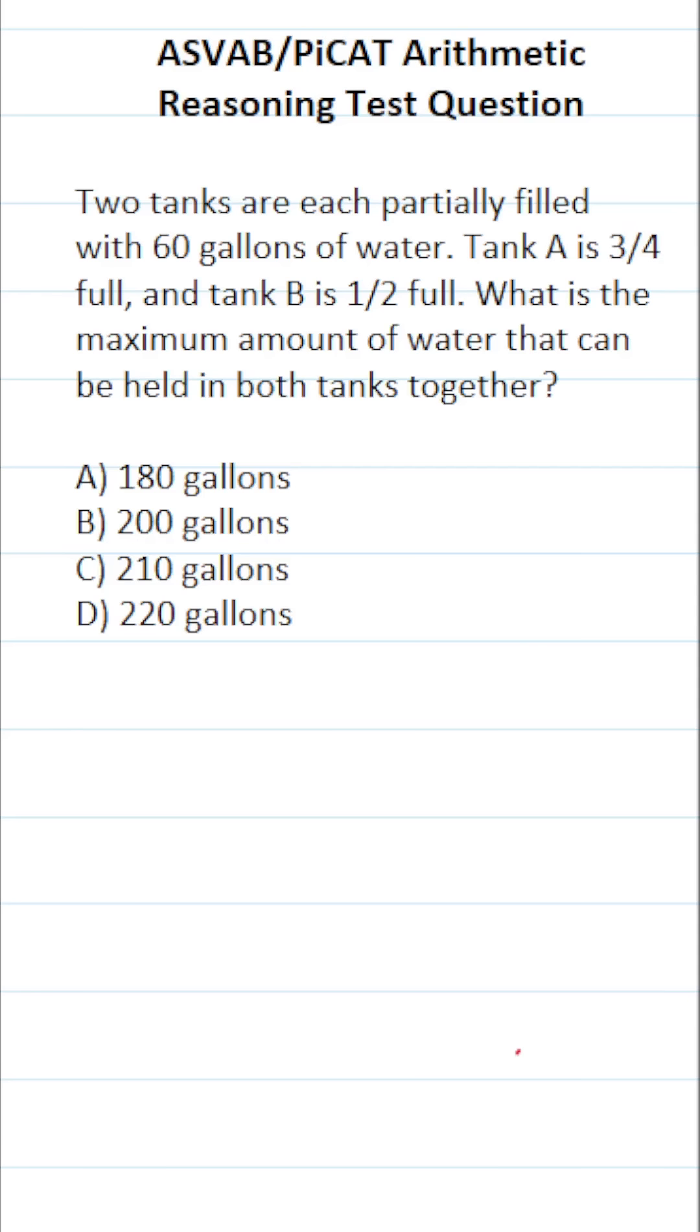This arithmetic reasoning practice test question for the ASVAB and PICAT says: Two tanks are each partially filled with 60 gallons of water. Tank A is three-fourths full and tank B is half full. What is the maximum amount of water that can be held in both tanks together?